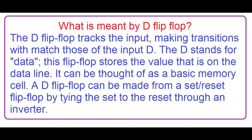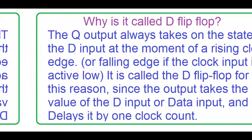What is meant by D flip-flop? The D flip-flop tracks the input, making transitions that match those of the input D. The D stands for data — this flip-flop stores the value that is on the data line. It can be thought of as a basic memory cell. A D flip-flop can be made from a set/reset flip-flop by tying the set to the reset through an inverter.